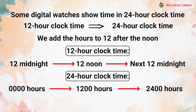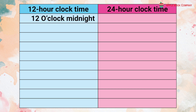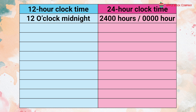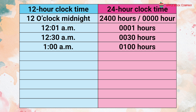In 24-hour clock time, to represent minutes we write 2 more digits for minutes to the right of the number of hours. Comparison: 12 midnight = 2400 or 0000 hours; 12:01 AM = 0001 hours; 12:30 AM = 0030 hours; 1 AM = 0100 hours; 10 AM = 1000 hours.